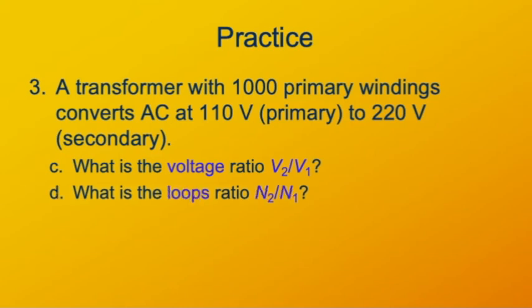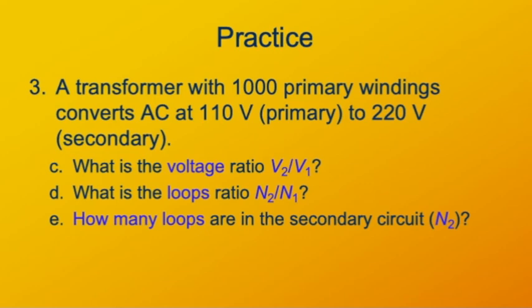Then what is the windings ratio? Again, I hope you recognize that the windings ratio is the same as the EMF ratio, 2 to 1, or just 2. How many loops must be in the secondary circuit? We've already said there have to be twice as many as in the primary. The primary has 1000, so the secondary must have 2000.